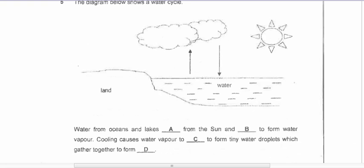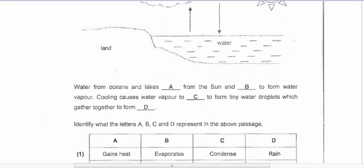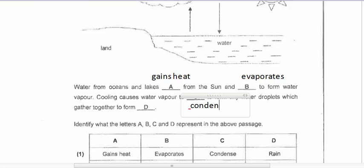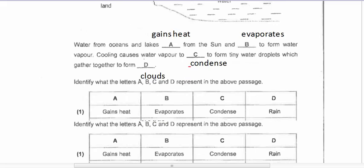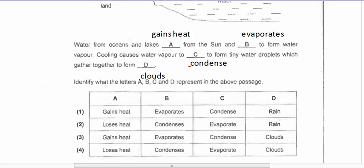Question five is about the water cycle — fill in the blanks. Water from oceans and lakes gains heat from the sun and evaporates to form water vapor. Cooling causes the water vapor to condense to form tiny water droplets, which gather together to form clouds. Therefore the answer is option three.